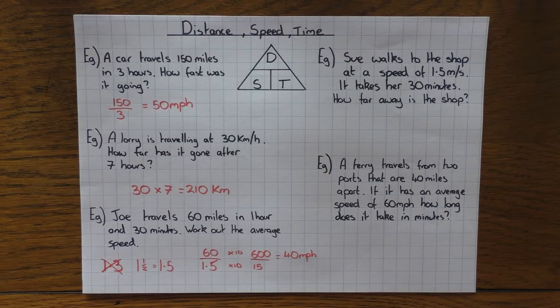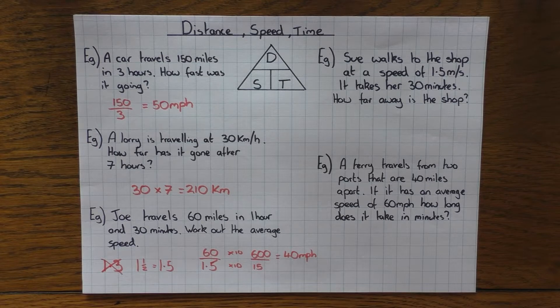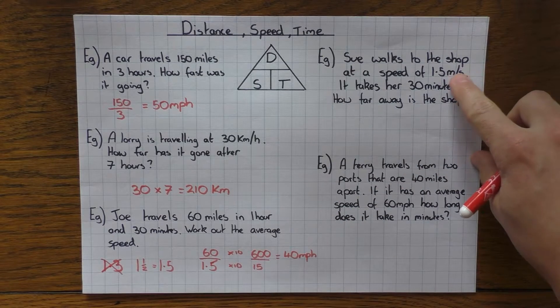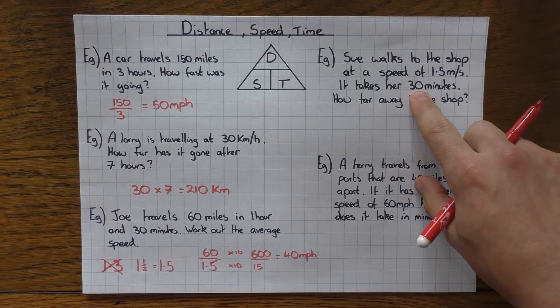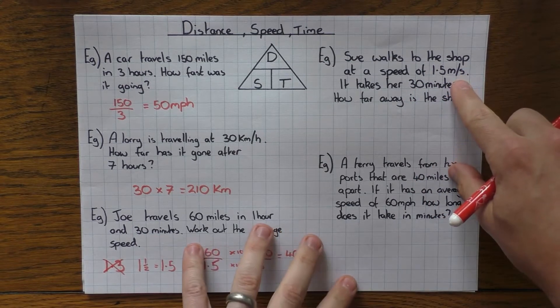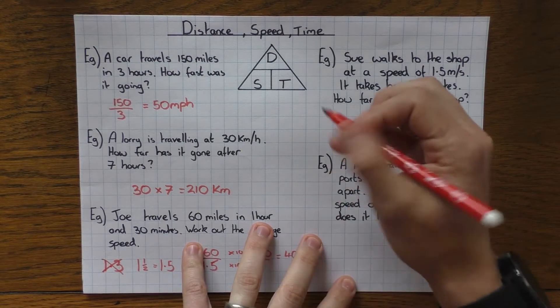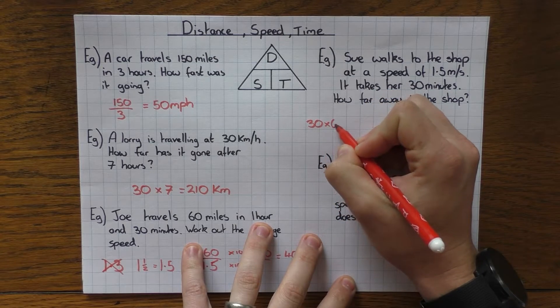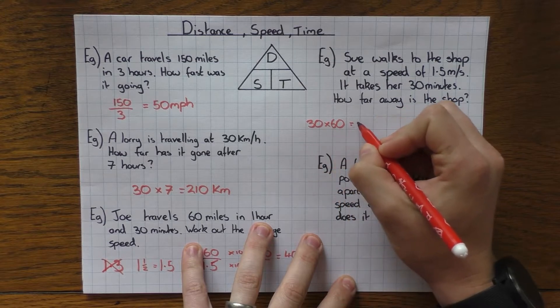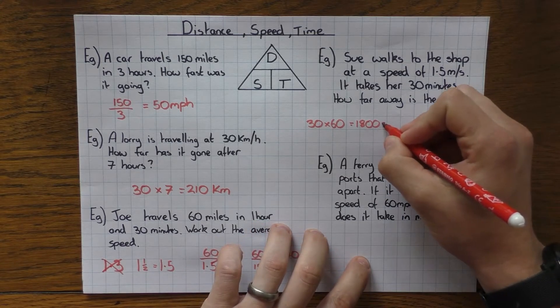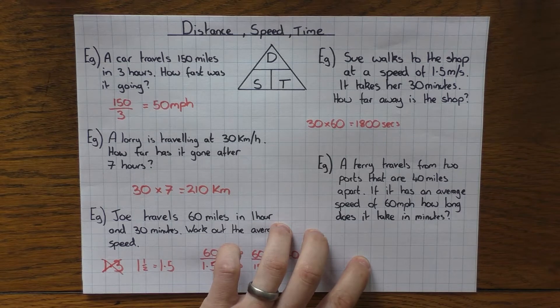Let's look at the next one. Sue walks to the shop at a speed of 1.5 meters per second. It takes her 30 minutes. How far away is the shop? So again, need to be careful here. The speed is in meters per second, but the time is in minutes. So I'm going to convert the minutes into seconds so the units are the same. Now there are 60 seconds in one minute. So to work out the total amount of seconds, I'm going to do 30 times by 60. So three times six is 18. I'm going to add my two zeros there. So that's 1,800 seconds, which is good.